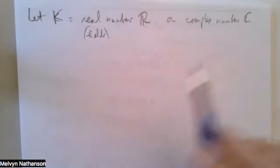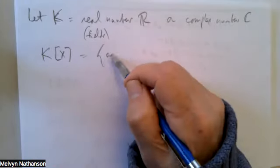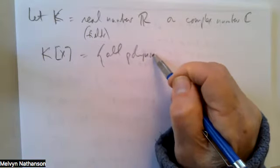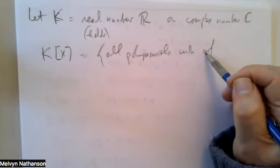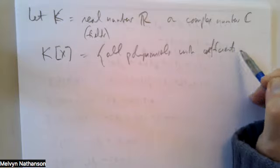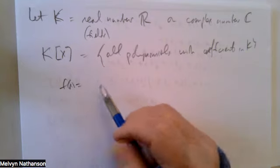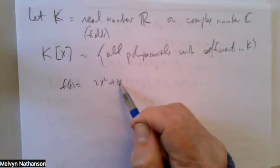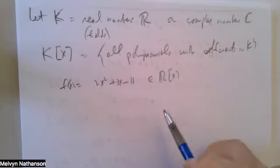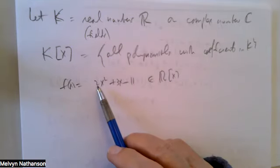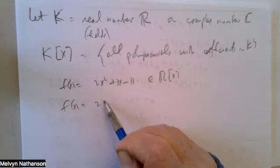The real numbers are a field, the complex numbers are a field. By K[x] we mean the set of all polynomials with coefficients in the field K. For example, if you take the polynomial f(x) = 2x² + 3x - 11, this is in the set of polynomials with real coefficients, since 2, 3, and -11 are real numbers.